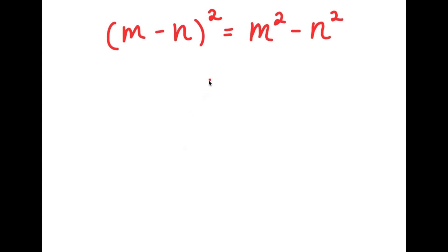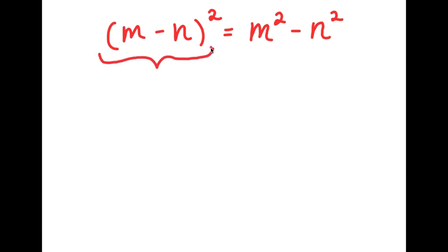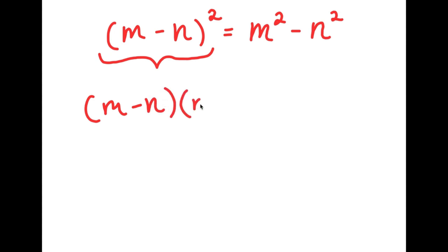In this problem, I have m minus n squared is equal to m squared minus n squared. To solve this problem, I'm going to first start by rewriting m minus n squared as m minus n times m minus n.